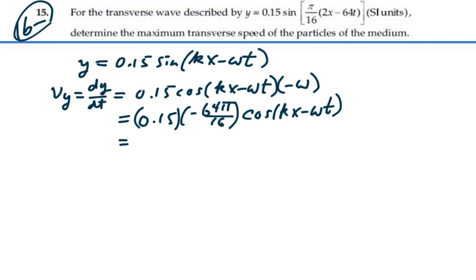or we could say that this is going to be negative 0.6, because 4 times 0.15 is 0.6 pi cosine kx minus omega t is our transverse velocity.